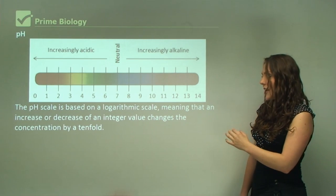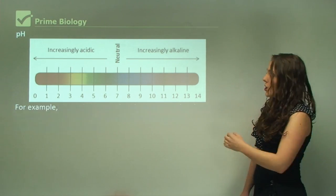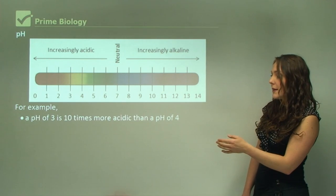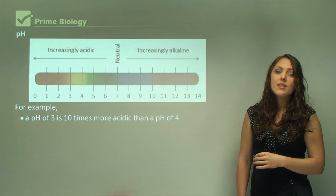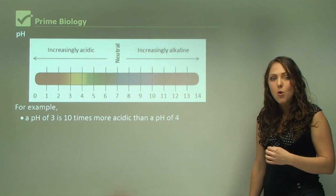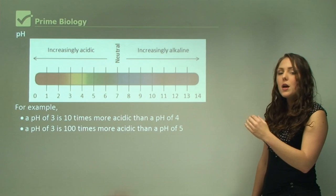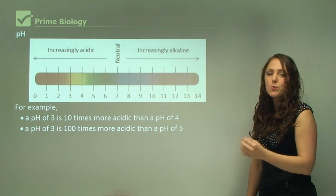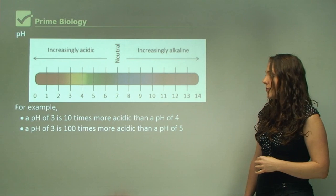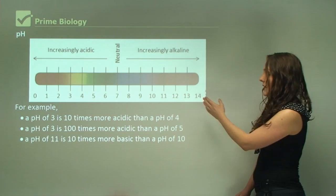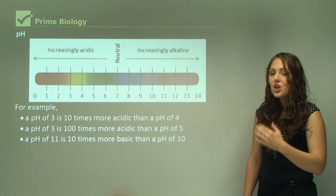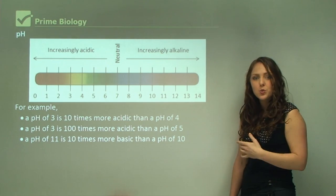The pH scale is based on a logarithmic scale, meaning that an increase or decrease of an integer value changes the concentration by tenfold. For example, a pH of 3 is 10 times more acidic than pH 4, and a pH of 3 is 100 times more acidic than pH 5. In the same way, a pH of 11 is 10 times more basic than pH 10.